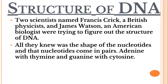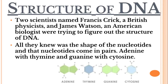So Watson and Crick basically had the pieces of the puzzle. They knew these four nucleotides composed DNA, and that adenine and thymine always appeared in equal amounts, as did cytosine and guanine. What they didn't know was how these four nucleotides actually fit together to make the physical structure of DNA.